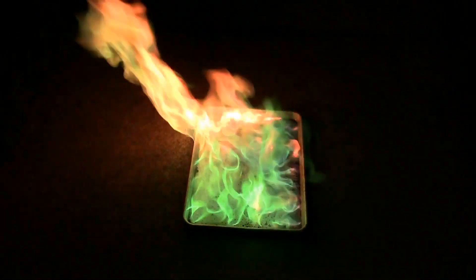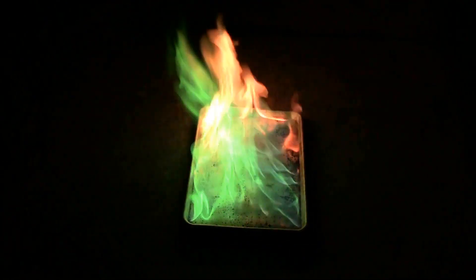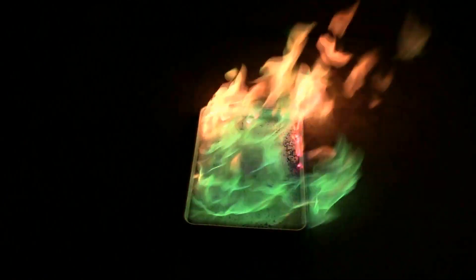So flame tests like I mentioned are used to identify elements. So if you don't know what a particular compound is you can burn it and the color that it imparts to a flame tells you something about it. So as I said the green is the color of boron. This yellow orange is the color of sodium.